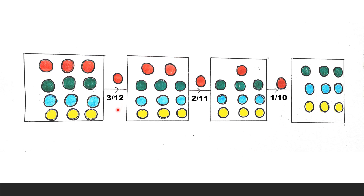The probability of picking the first red ball is 3/12. Now the total number of balls is reduced to 11 and the number of red balls is reduced to 2. Therefore, the probability of picking the second red ball is 2/11. In the same way, the probability of picking the third red ball is 1/10.